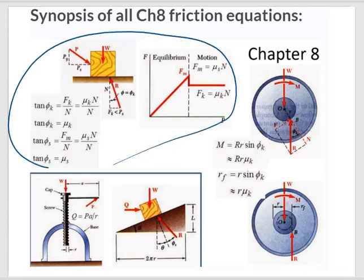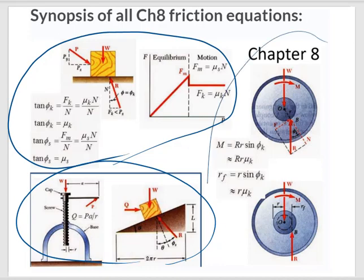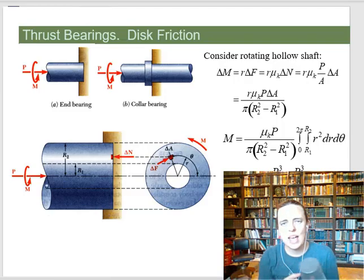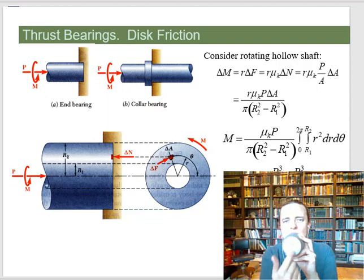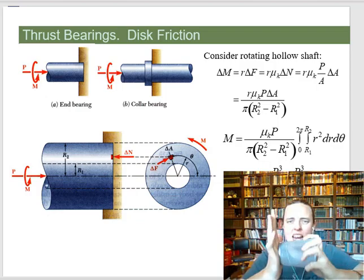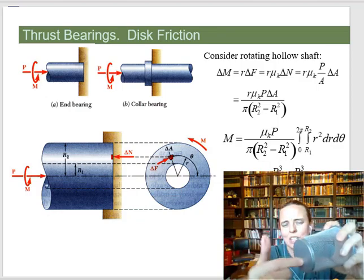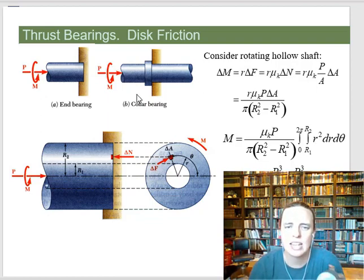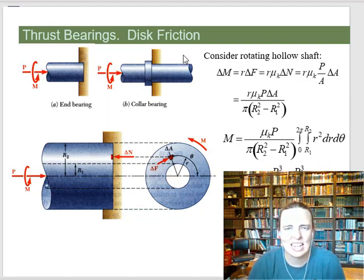Previously we looked at blocks, threaded fasteners, and bearing friction. This time we're going to expand out and look at thrust bearings. For thrust bearings, you have an entire surface that's pushed up against something and rotating, where the entire surface is pushing and rotating. You can have an entire circle, or maybe just a collar where the edge is rotating and the center is like an axle.